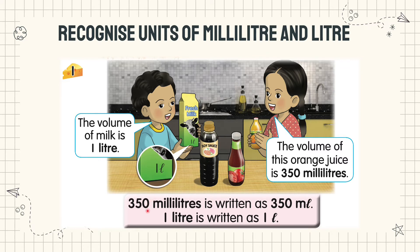350 milliliters is written as 350 ml. One liter is written as one L. Simbol untuk milliliter ialah ml. Simbol untuk liter ialah L.